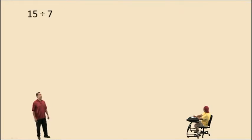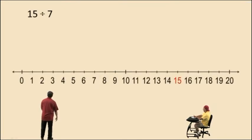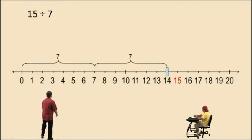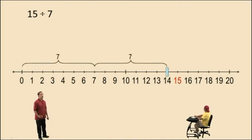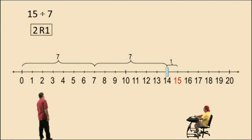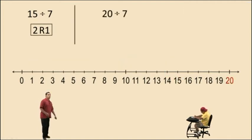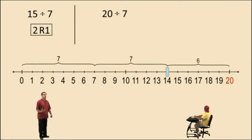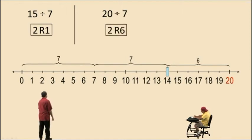Let's take a look at 15 divided by 7. How many 7's go into 15? Well, there's one 7, and there's the second 7. So 2 whole 7's go into 15, but we have a remainder of 1 unit. So our answer is 2 with a remainder of 1. How about 20 divided by 7? Well, 2 sevens gives us 14, and this time we have a remainder of 6. So 2 whole 7's go into 20, but you have a remainder of 6 units.